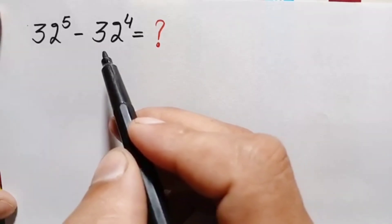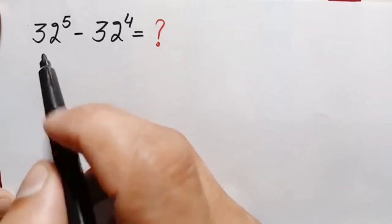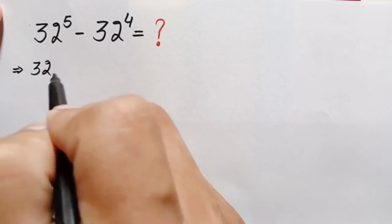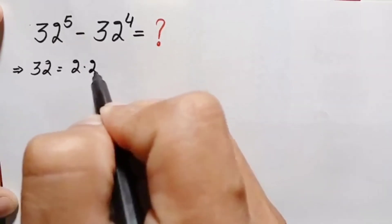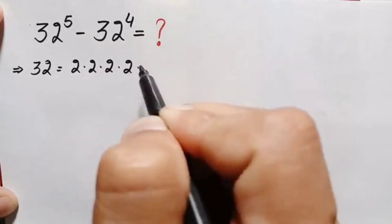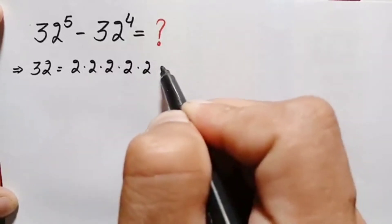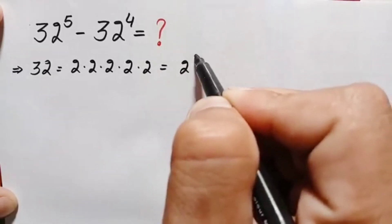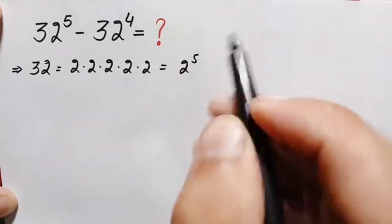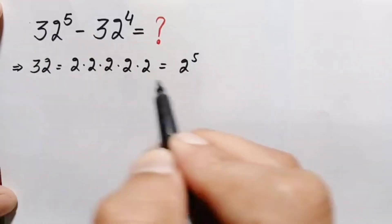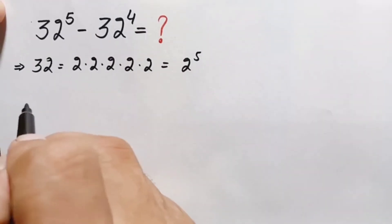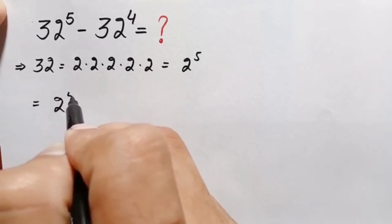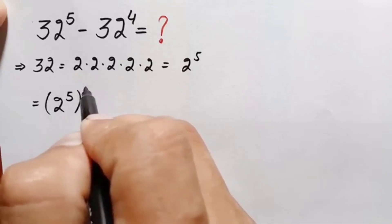First, we rewrite the base 32 in exponential form. 2 times 2 is 4, times 2 is 8, times 2 is 16, times 2 is 32 — so 2 is multiplied 5 times. Therefore 32 equals 2 raised to power 5. Substituting, the expression becomes 2 raised to power 5, whole raised to power 5, minus 2 raised to power 5, whole raised to power 4.